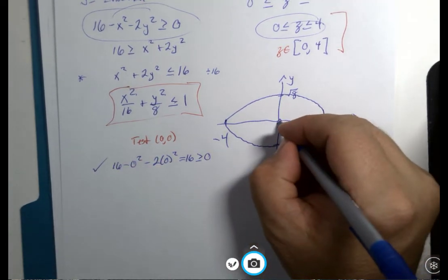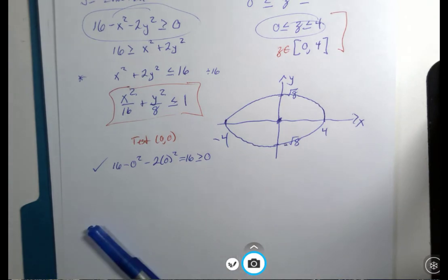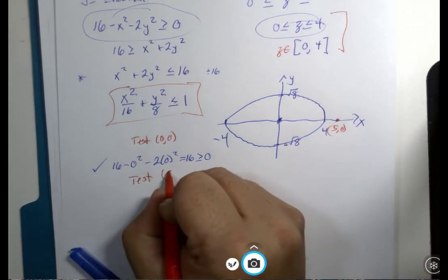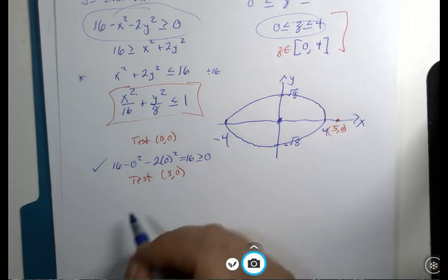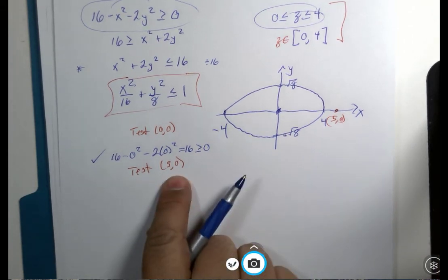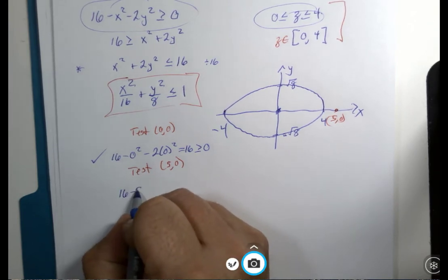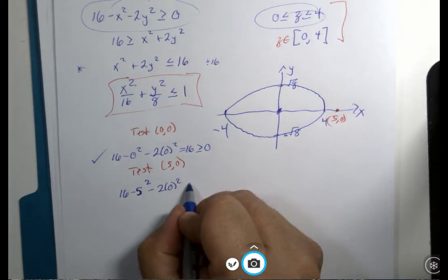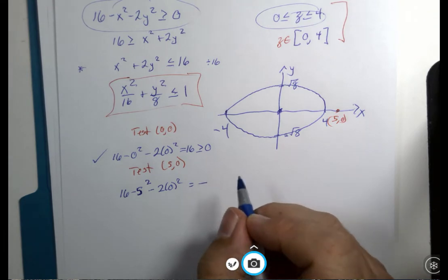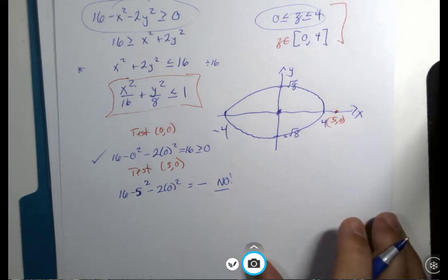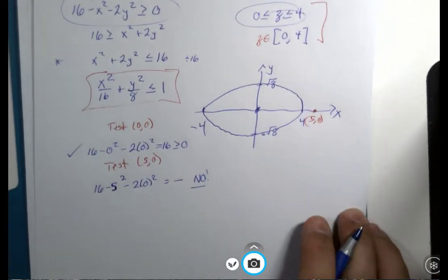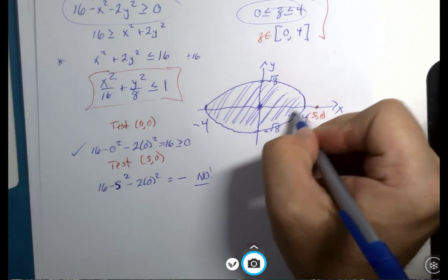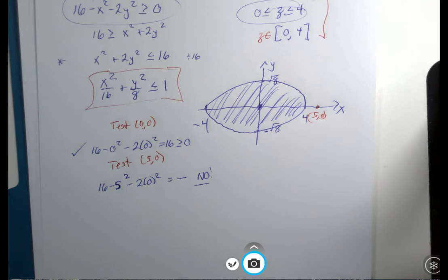Well, what if we test the point out here, (5,0)? What's that do? 16 - 5² - 2(0²) equals a negative number. No, you cannot take the square root of a negative number.